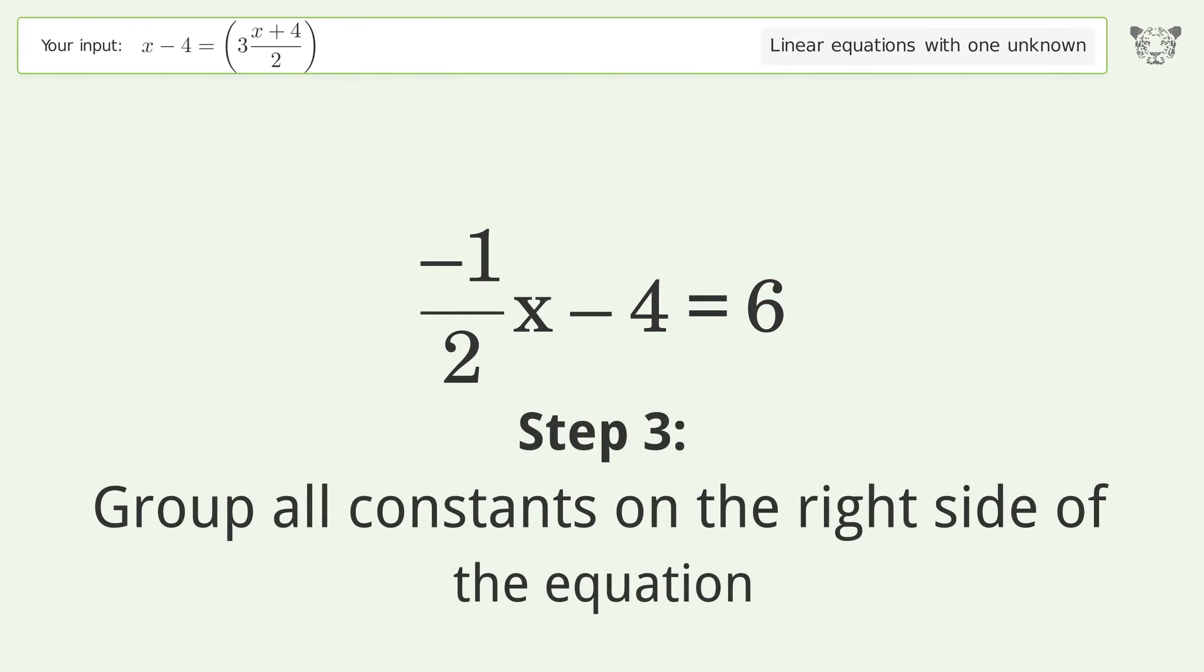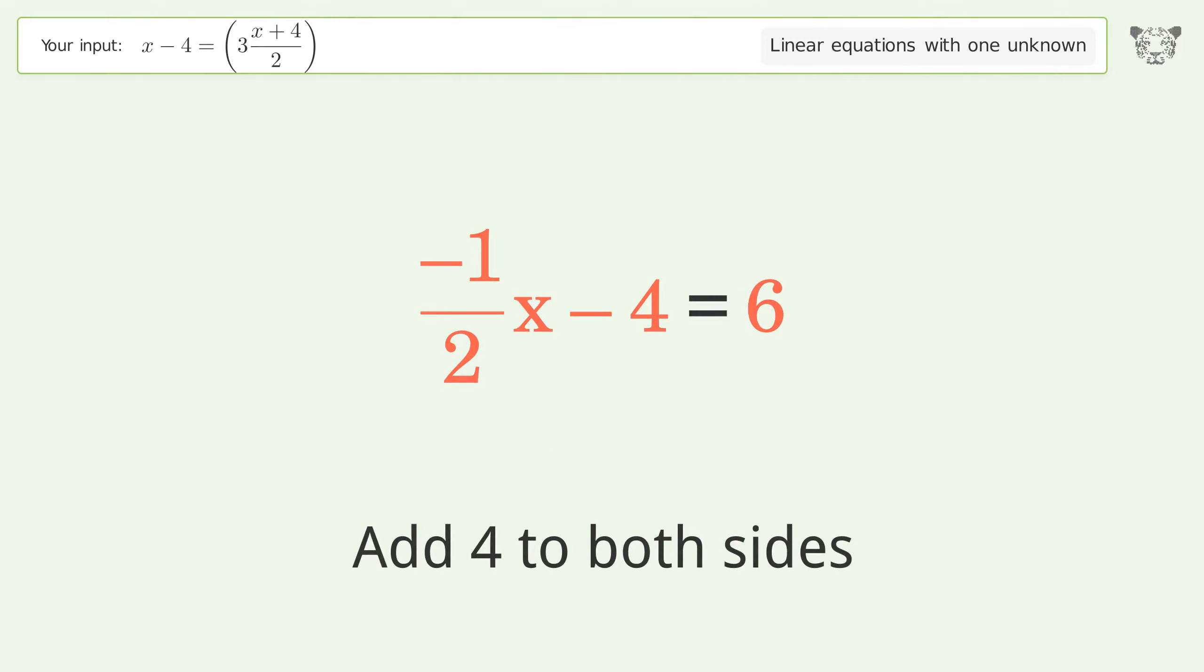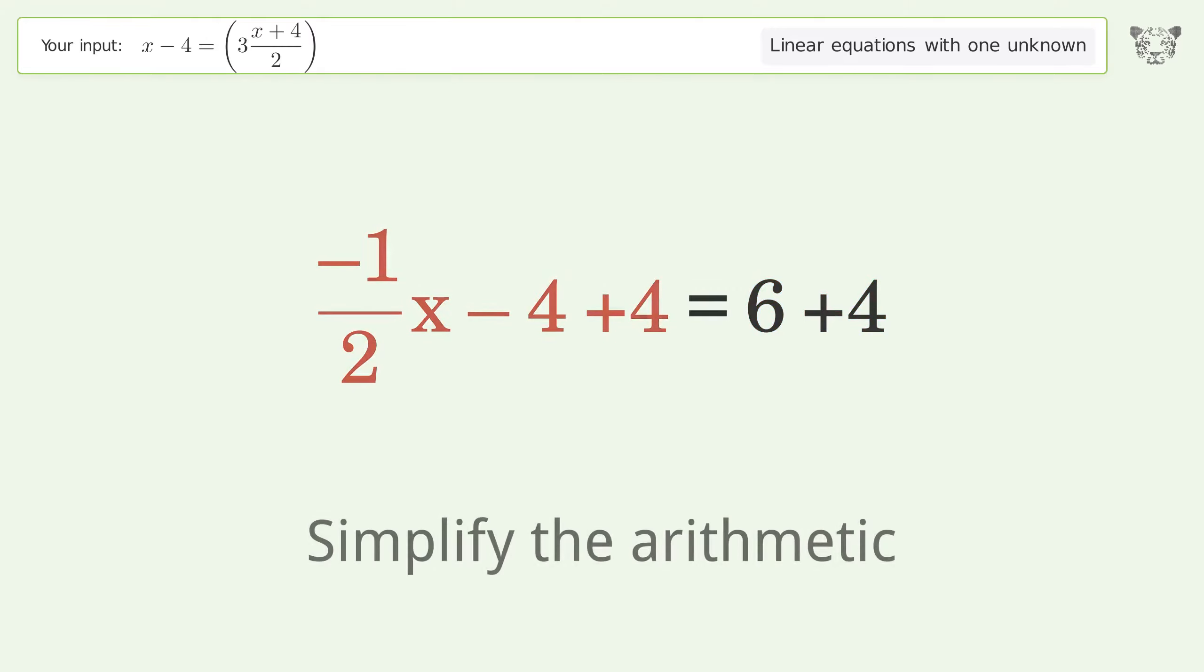Group all constants on the right side of the equation. Add 4 to both sides. Simplify the arithmetic.